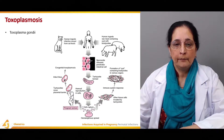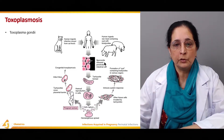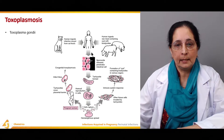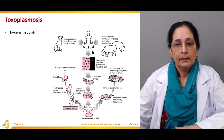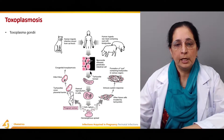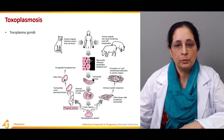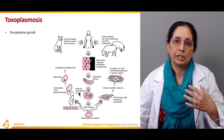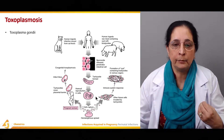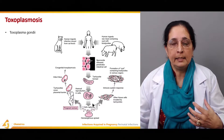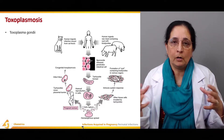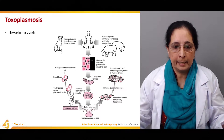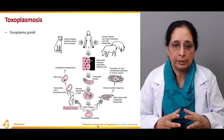The next step in the cycle is that sporozoites are released, which penetrate intestinal cells in humans. These sporozoites are then transformed into tachyzoites. Asexual reproduction takes place in the cells infected with tachyzoites, then the cell ruptures and there is spread of these tachyzoites in the blood — hematogenous spread occurs after the rupture of the cell.